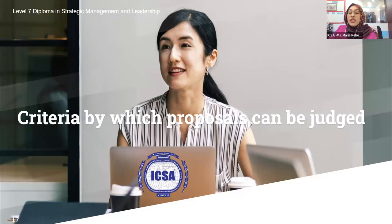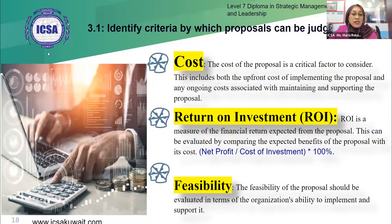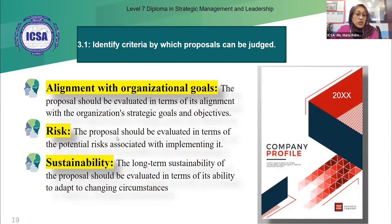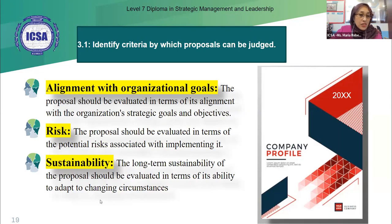The criteria by which proposals can be judged include: financial metrics (ROI, ROCE, NPV, IRR), feasibility (how it will be implemented and supported), alignment with organizational goals (whether the project supports strategic objectives), risk assessment (since every risk has a potential cost), and sustainability (how the business will adapt to changing circumstances over time). These are all criteria for judging whether a proposal is viable.